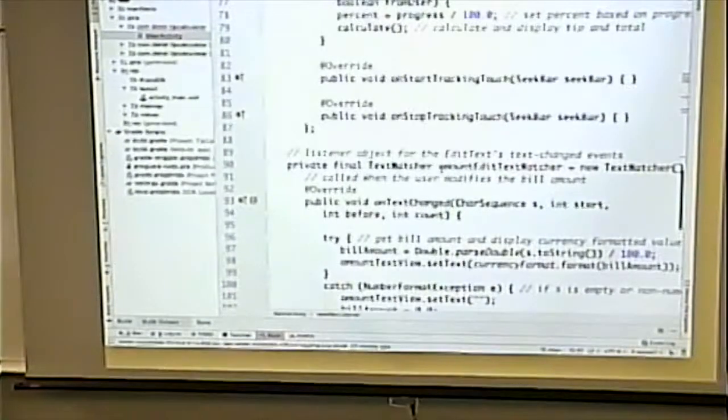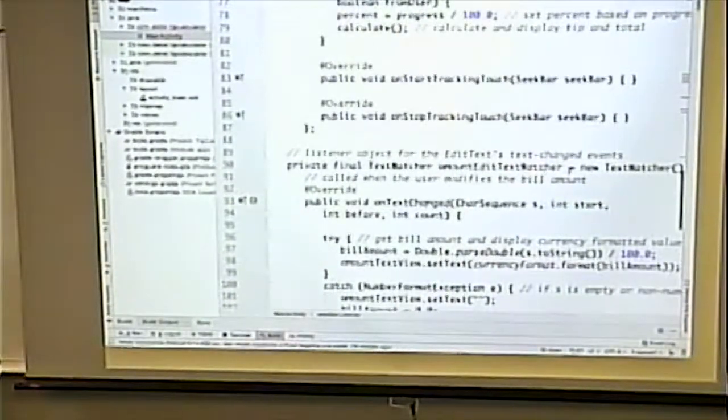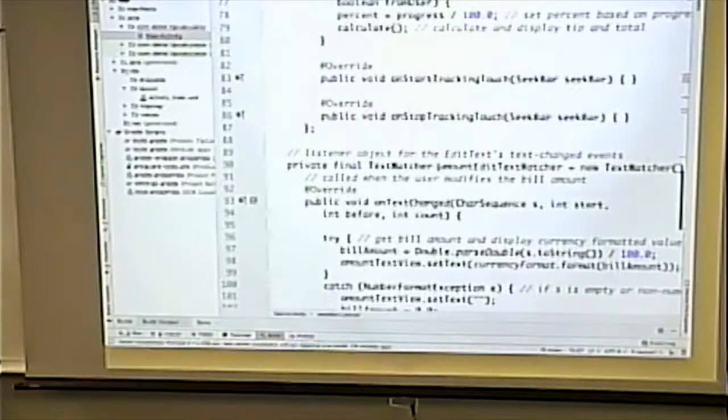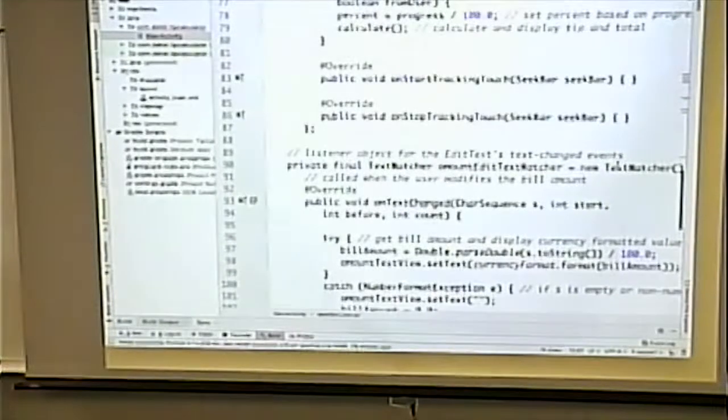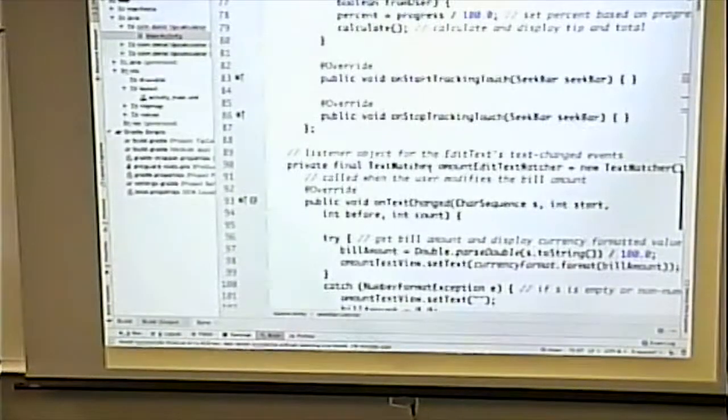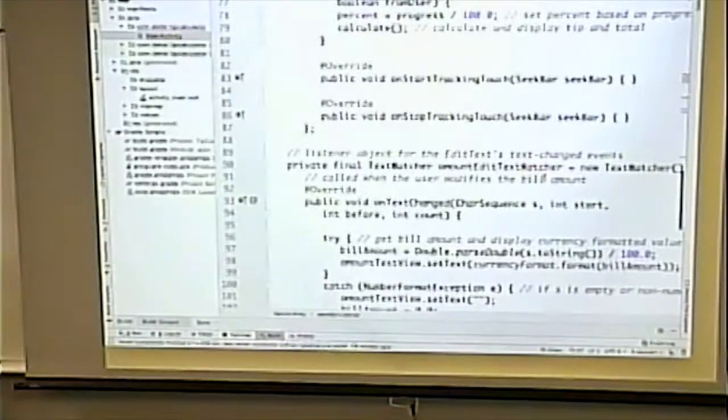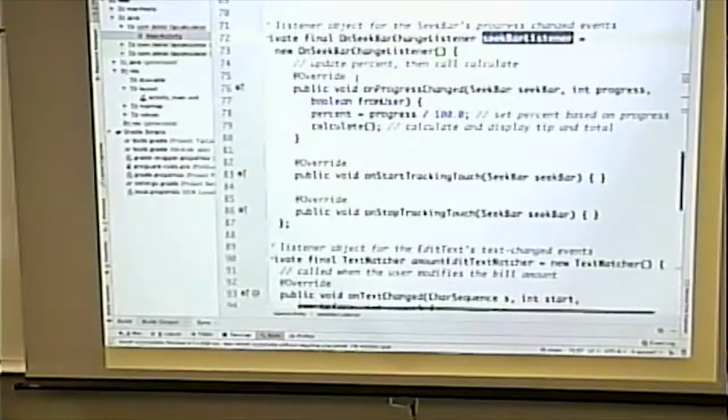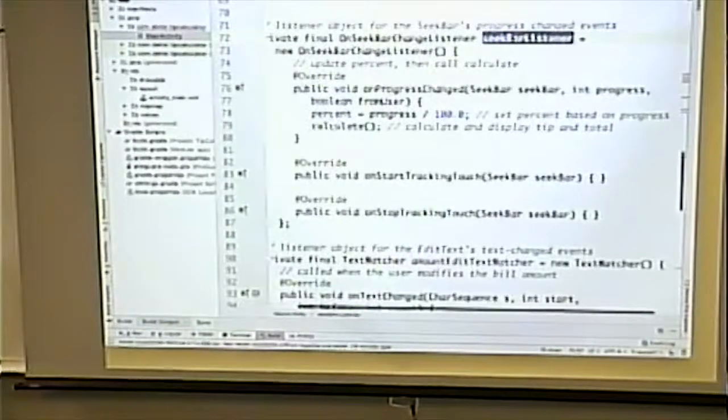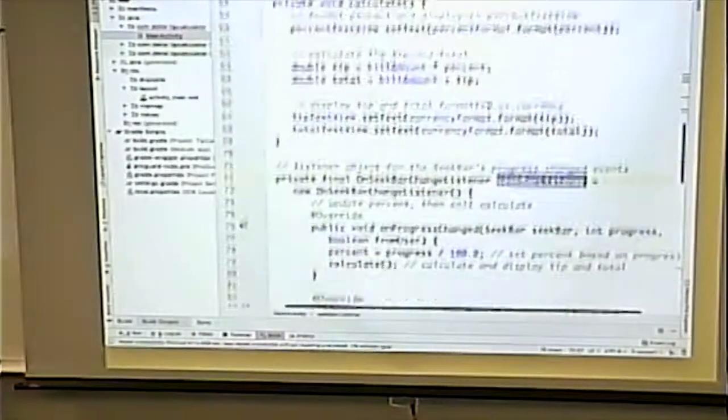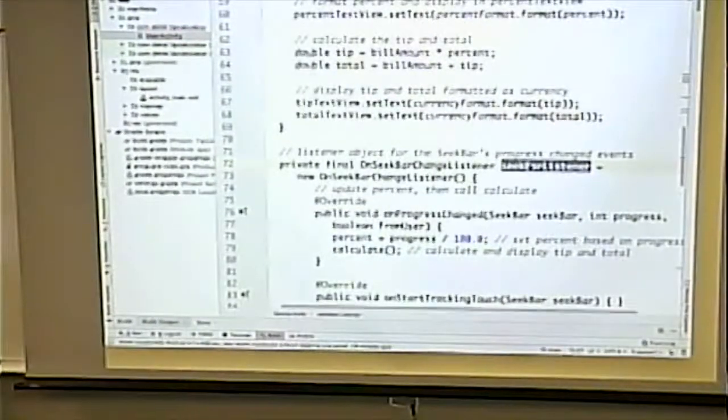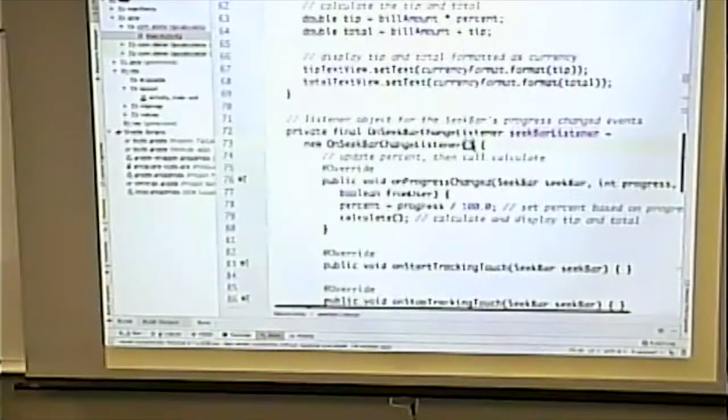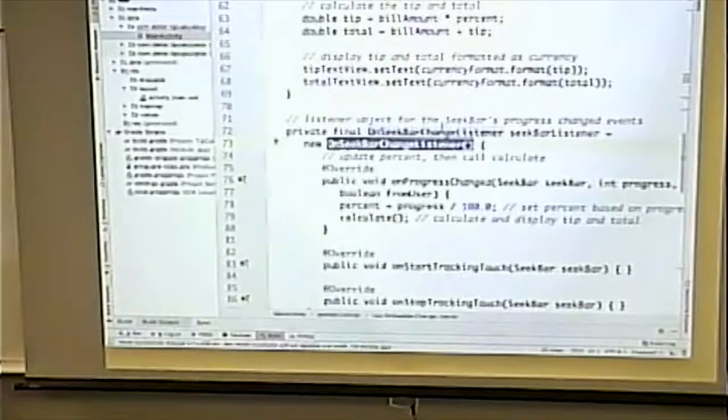We have the same thing for text watcher. Private final text watcher amount edit text watcher equals new text watcher. So that creates a new object. A new text watcher object named amount edit text watcher. And a new seek bar listener named seek bar listener. So those are our objects. Those are our listeners. And they're of this type.